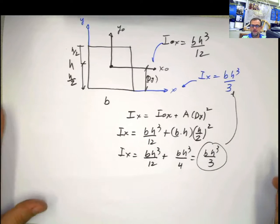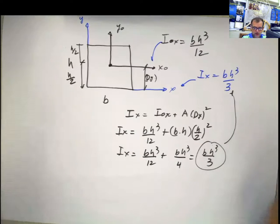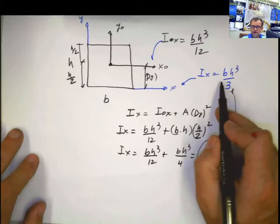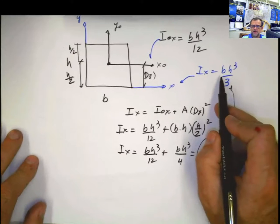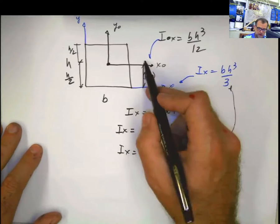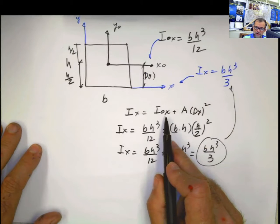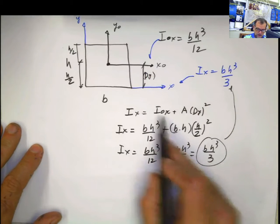Now, be careful, because if what you have is the opposite, I have the moment of inertia with respect to any axis and I want to calculate the moment of inertia with respect to the centroid, I have to solve for that one here. From this equation,